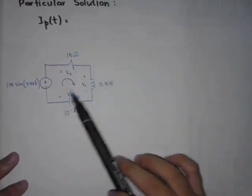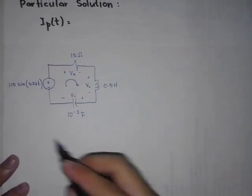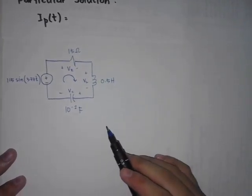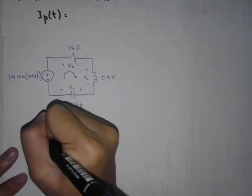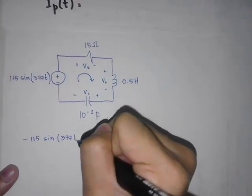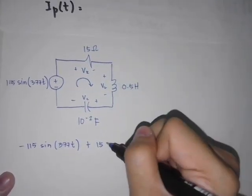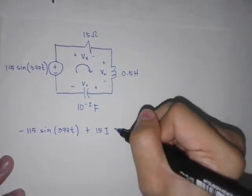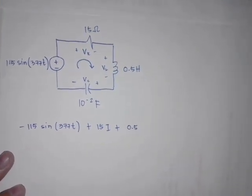We will find the equation through this loop using Kirchhoff's Voltage Law. Kirchhoff's Voltage Law states that the summation of the voltages is equal to 0. So, we write: negative 115 sine 377T plus 15 times I, plus 0.5...